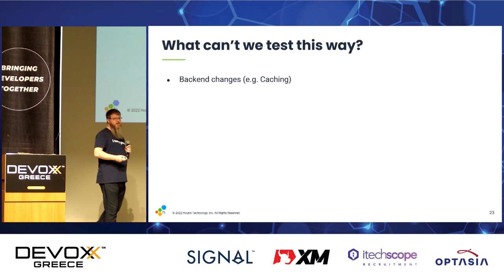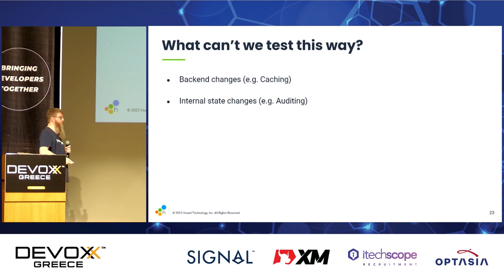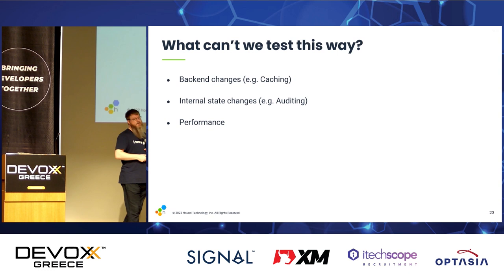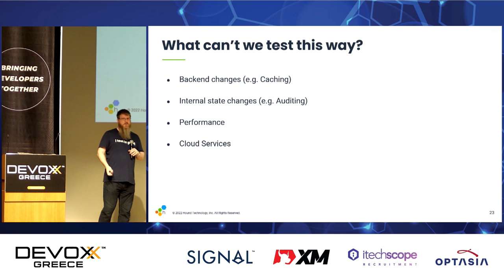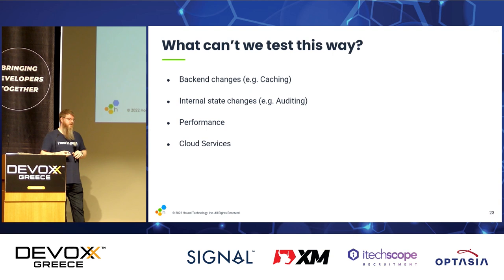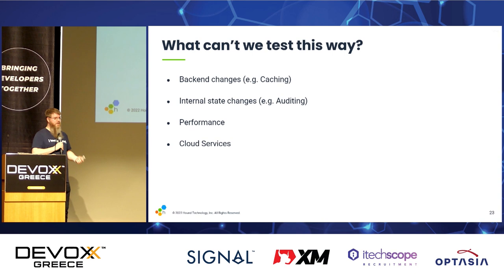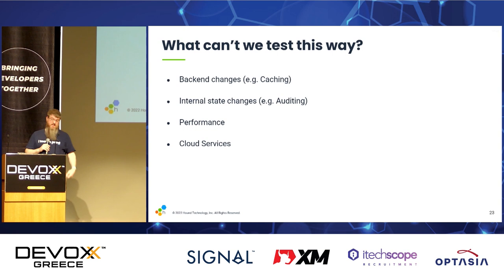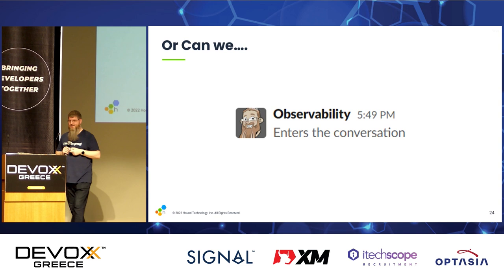What can't we test this way? Things we can't test: when a backend changes based on the same request — like caching — because from a customer perspective it looks the same. We can't test internal state changes like audit. Performance is another one. We can't test cloud services well because response times matter — we have one service with 8,000 tests that runs in nine seconds, but if it used cloud services like Service Bus or Cosmos, it wouldn't respond that quickly. And we can't test deployment configuration — connection strings and such. Or can we?